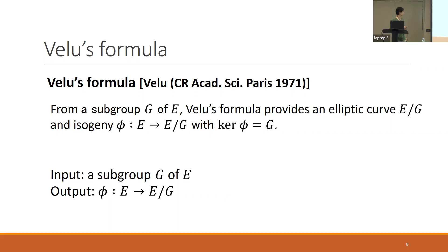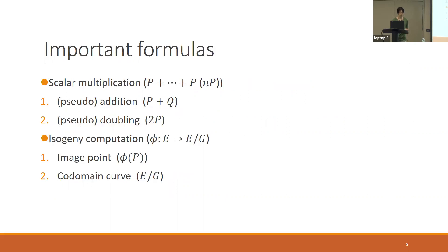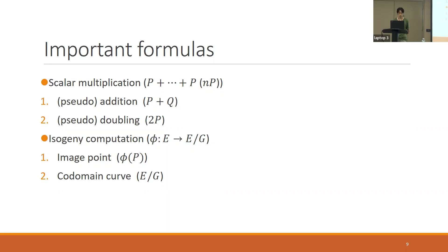In isogeny-based cryptography, we use these formulas and compute many isogenies. There are four important computations: first is addition, second is doubling. We can construct scalar multiplication by using these two formulas. Third is a computation for image points, and the last is a computation for the quotient curve E/G. Any isogeny-based cryptosystem uses these four computations, so it is important to make these computations efficient.